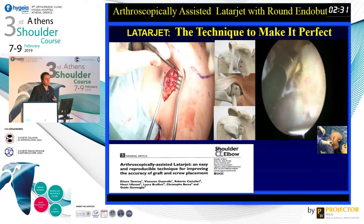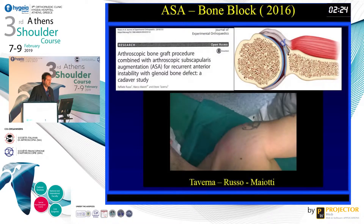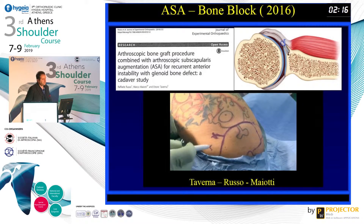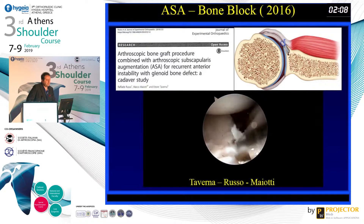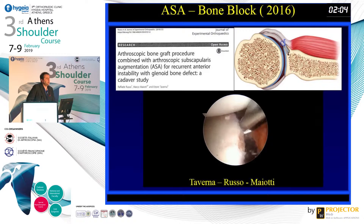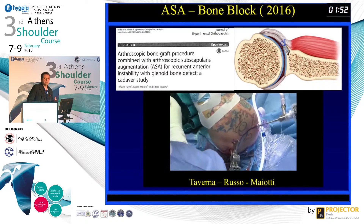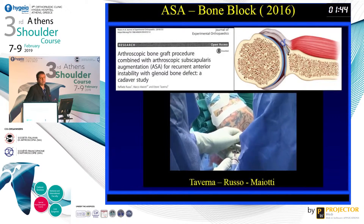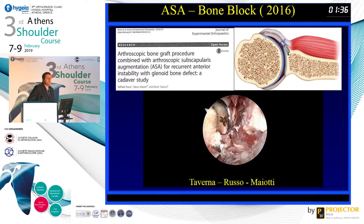Thanks to Italian surgeons Maiotti and Russo, we started combining the bone block with subscapularis tenodesis in cases of chronic instability. I was initially reluctant but began doing this technique. The first case was done in Rome with Marco Maiotti, and we are now collecting data. Our hypothesis is non-inferiority compared to Latarge, and it appears that is the case. This technique is safer — no difficult portals, everything is intra-articular. Importantly, if it fails, we can still perform a Latarge; the reverse — grafting after a failed Latarge — is very difficult.